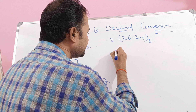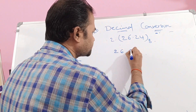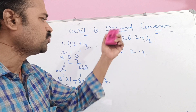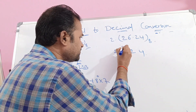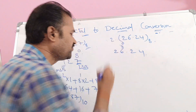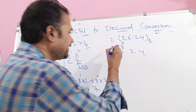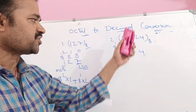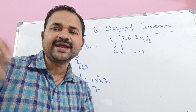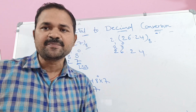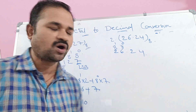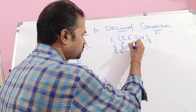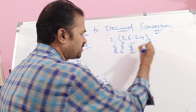The second number is 26.24 (octal). The digit 6 is the least significant bit of the integer part, so we write 8 power 0 on top of it. On top of 2, we write 8 power 1. After the dot, we write 8 power minus 1, 8 power minus 2, and so on, depending on the number of digits after the dot. So we assign 8 power minus 1 and 8 power minus 2 to the fractional digits.